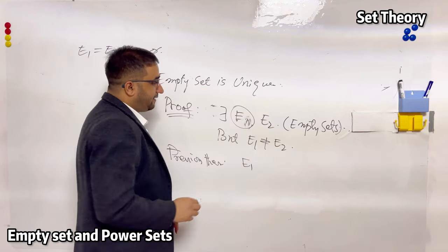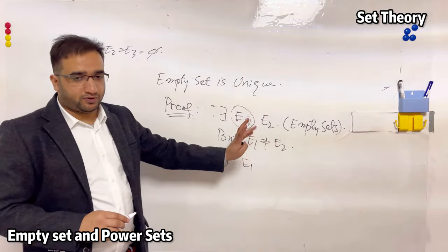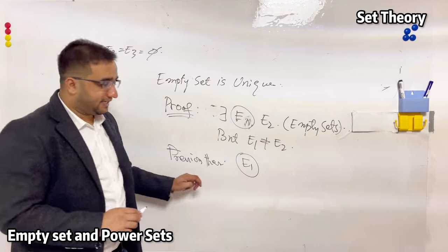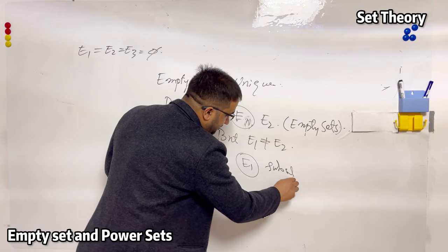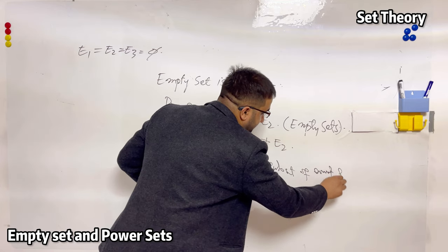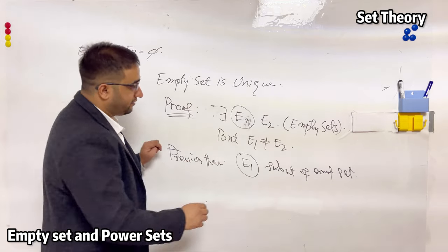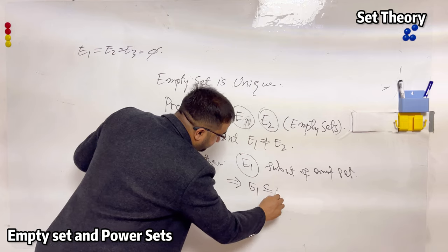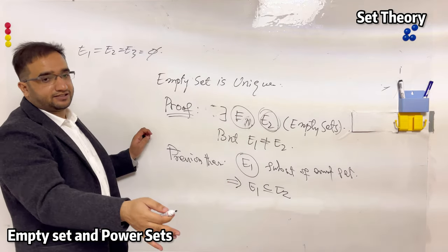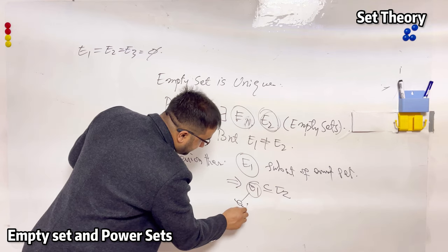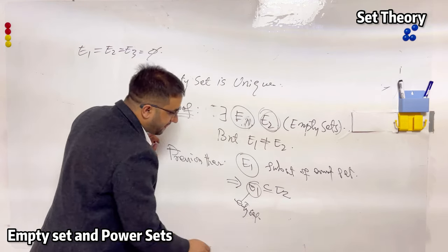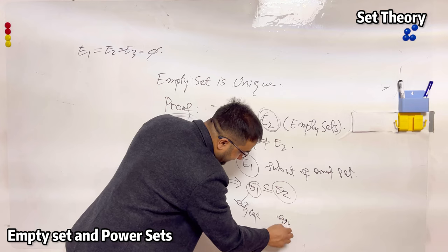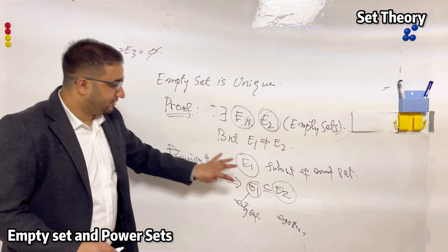Since E1 and E2 are both empty, take E1 first. If E1 is an empty set, then it is a subset of every other set in the universe. Since E2 also exists in the universe, E1 is a subset of E2 — this follows from the previous theorem. This gives us equation 1.